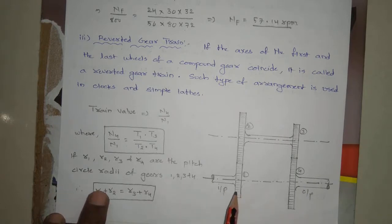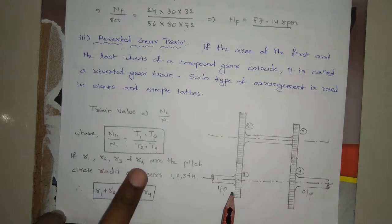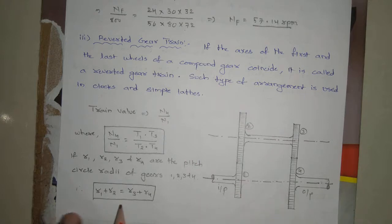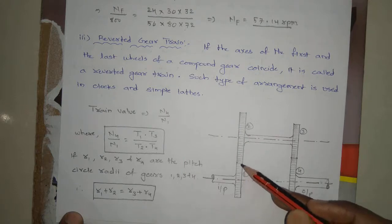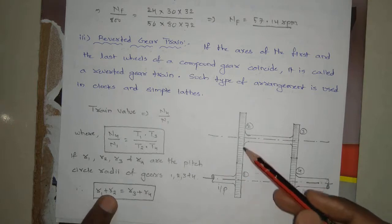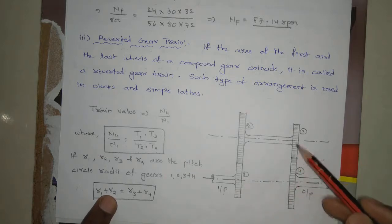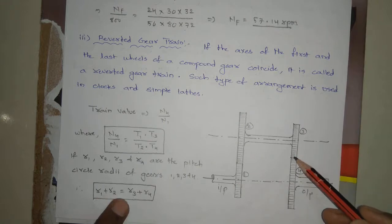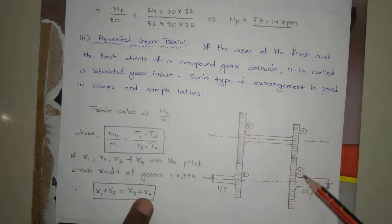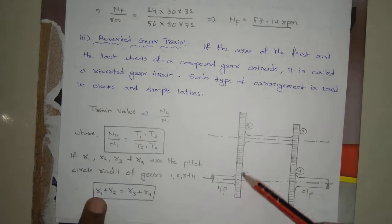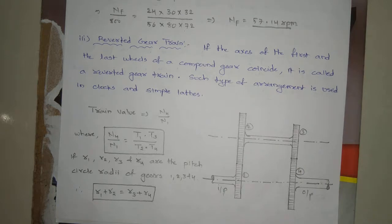There is one additional relation for the reverted gear train. If r1, r2, r3, and r4 are the pitch circle radii of gears 1, 2, 3, and 4, then: r1 + r2 = r3 + r4. This is because the center distance between the first pair must equal the center distance between the second pair, since the input and output shafts coincide. This is the additional formula for the reverted gear train.